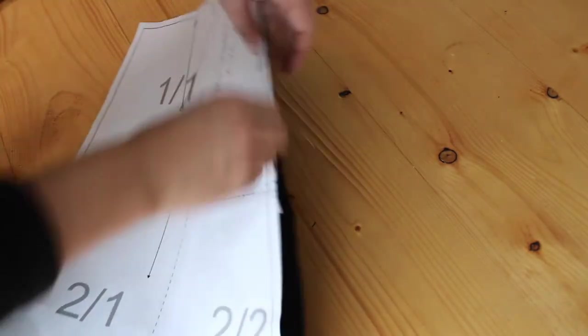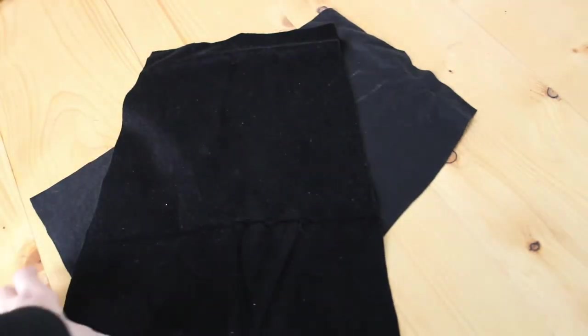You should now have one front piece, two back pieces, and two waistband pieces.